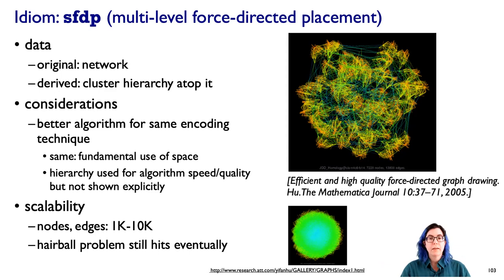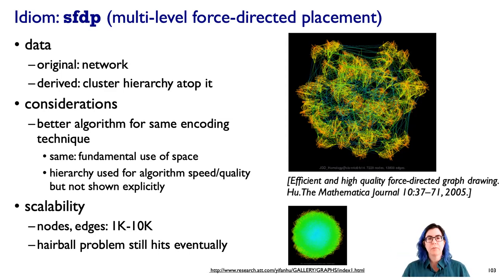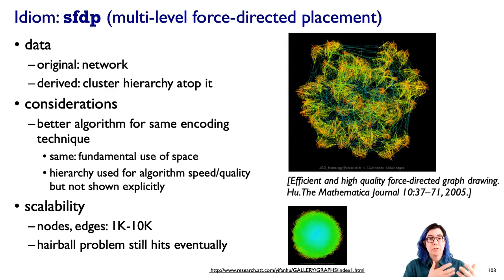With multi-level approaches you can computationally handle from a thousand to ten thousand nodes. However, there's still the question of whether you can actually understand the results. This often leads to what's called the 'hairball problem' in the graph drawing community — incomprehensible extreme clutter where everything is drawn on top of each other. We must differentiate between whether the algorithm can execute in reasonable time and whether the resulting image is actually comprehensible for a useful purpose.